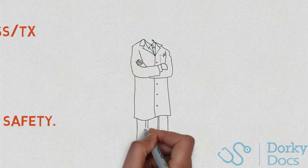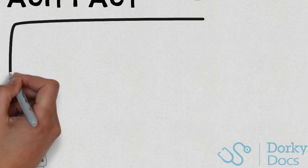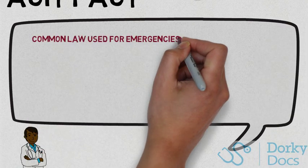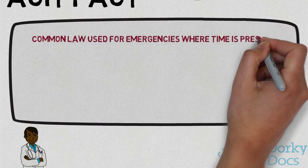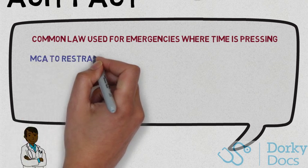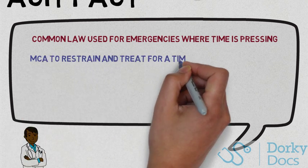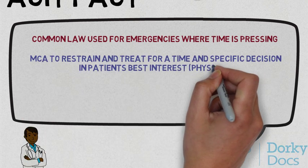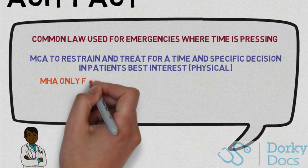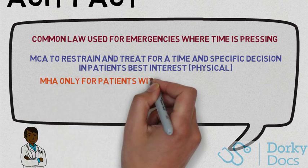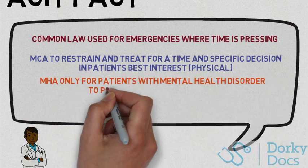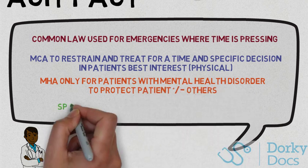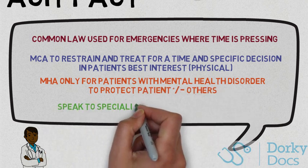To summarise this complex topic: common law is used for emergencies where time is of the essence. Mental capacity is used to restrain and treat a patient in their best interests in the context of a physical illness disrupting capacity. The Mental Health Act is only for patients with mental health disorders, to protect the patient and/or others. And always speak to the specialist psychiatry team when needed.